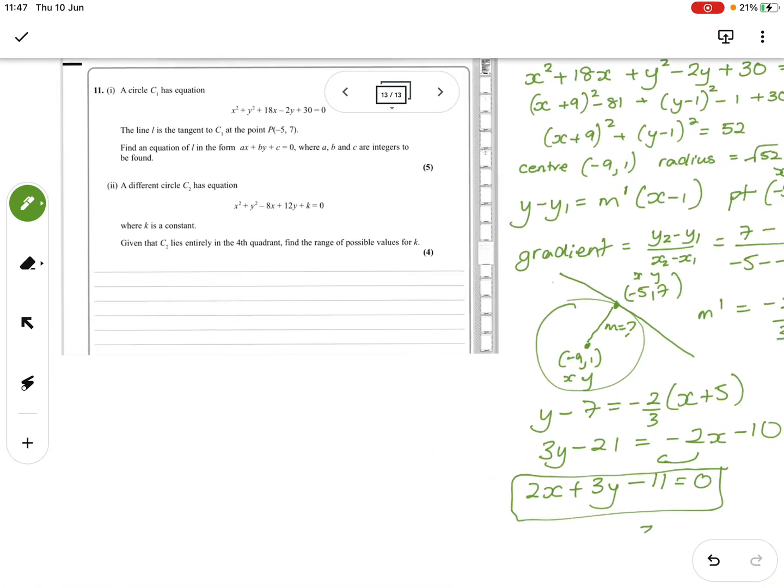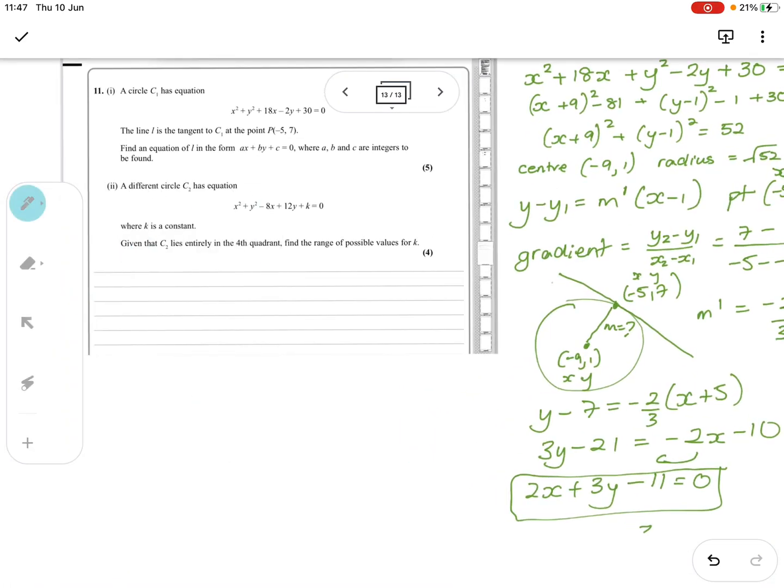So that is the first part. The second part. A different circle has this equation, where k is a constant. So very similar but different by the constant. So given that c2 lies entirely in the fourth quadrant, find the range of values.